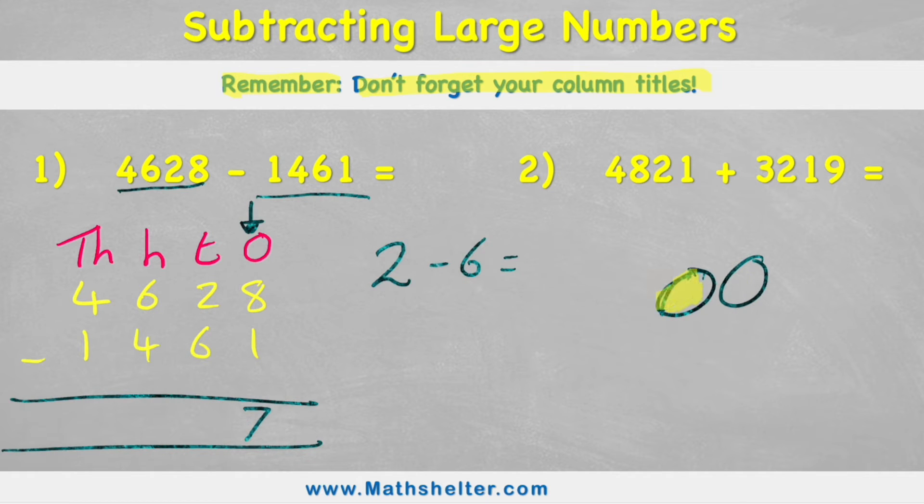Because look, if I have 2 and I try and subtract 6, I can't do it. If I have 2 apples and I try and take away 6, I can't. I can only take away a maximum of 2. So what can I do? Well, luckily I have some friends next door that I can borrow from. But let's understand exactly what's happening here. This question looks like 2 subtract 6, but it's actually 20 subtract 60 because it's in the tens column. Two tens would be 20, six tens would be 60.